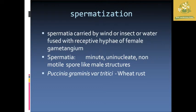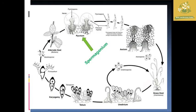After that, spermatization. Spermatization is mainly carried out by wind, insects, or water. The spermatia are fused with the receptive hypha of the female gametangium. Spermatia are small and unicellular, and are non-motile. They are the male structure. The female hyphae are the receptive type which accept the spermatia. This process is common in wheat rust, Puccinia graminis, and smut disease. In the process, spores are formed and move toward the female structures.